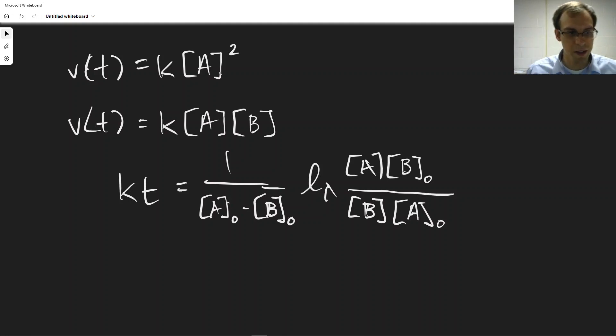We didn't go through the derivation of this, but this is the equation that you get if you want to consider two different reactants, each of them first order. So you can see, you get this hybrid between a first order and second order equation.